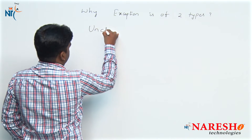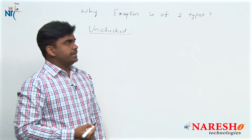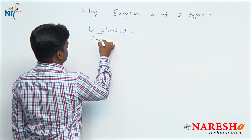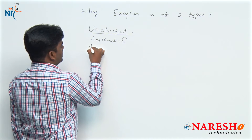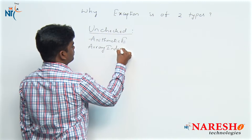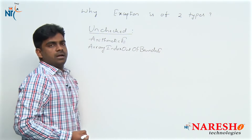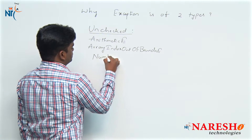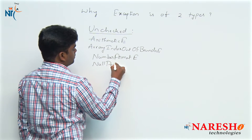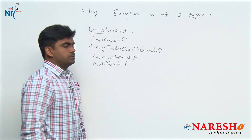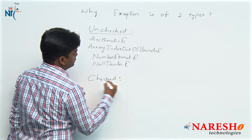First, I am writing some examples of unchecked exceptions. One unchecked exception is ArithmeticException. Second is ArrayIndexOutOfBoundsException. Next is NumberFormatException, and then NullPointerException. So four examples we are taking.